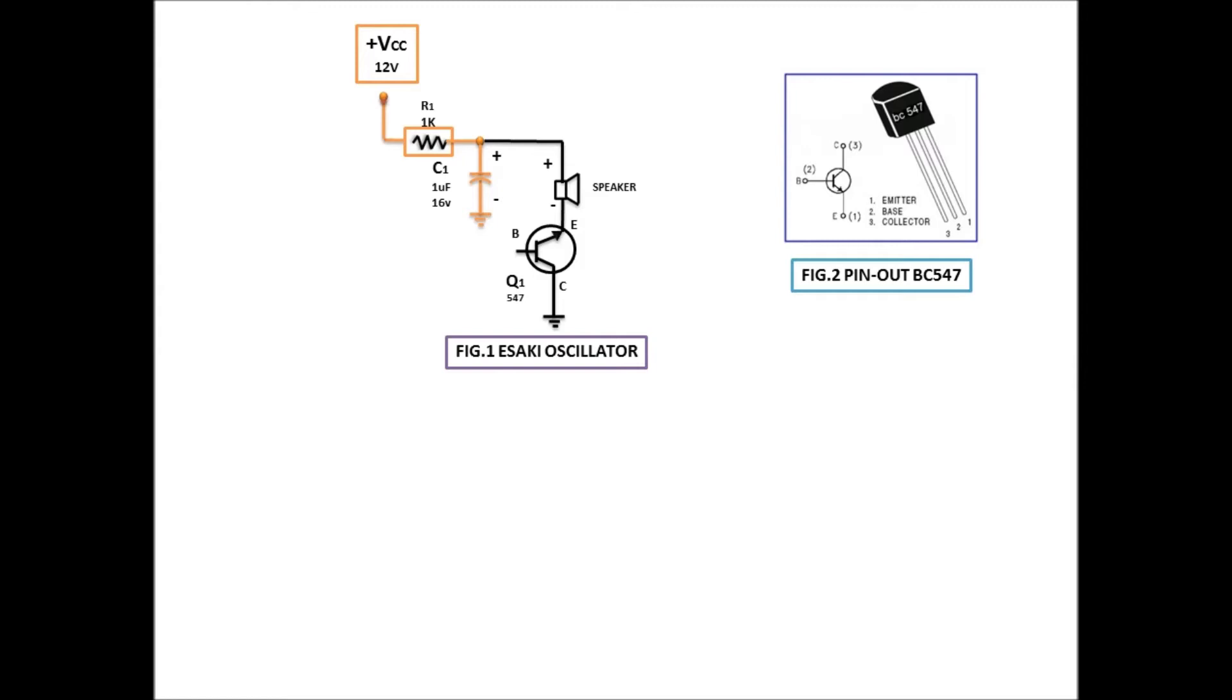Tumakbo ang kuryente sa resistor. Papuntang capacitor. Yan ang unang daloy ng kuryente. Nag-charge yung capacitor. Galing sa voltage supply. Dadaan muna ng resistor. Cha-charge ang capacitor. Ngayon, after na ma-charge ang capacitor, ang gagawin niya, i-discharge siya ngayon yan. Siya na ngayon ang voltage supply. Papuntang speaker, emitter, to collector, to ground. Kung ang voltage supply mo ay 12 volts. Yan.